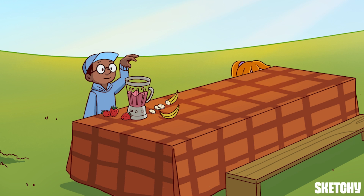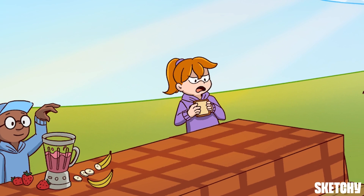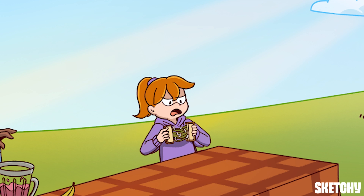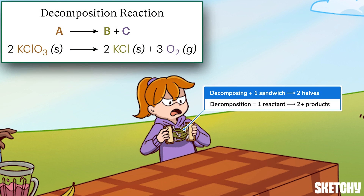While he blends away, let's see what his little sister is up to. Looks like she's about to dig into that de-composing sandwich. A helpful reminder that a decomposition reaction involves one reactant being split into two or more products, like how this decomposing sandwich was ripped into two pieces. Many decomposition reactions require energy input to occur — this can be provided by heat, light, or an external voltage source.